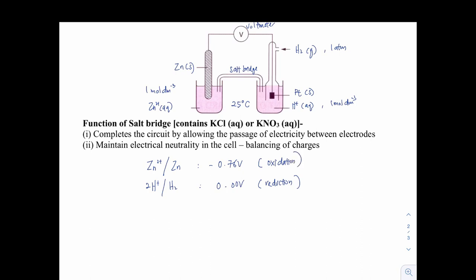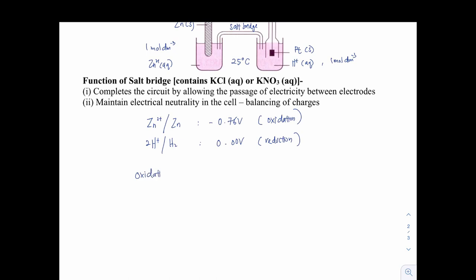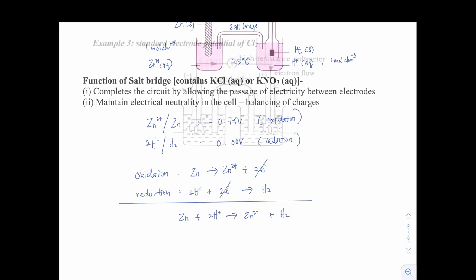From here, we can determine that oxidation happens at the zinc electrode. So therefore, we are going to flip the equation from the data booklet. So it becomes zinc forming zinc 2+ plus 2e⁻. Whereas the reduction will be 2H⁺ plus 2e⁻ forming H₂ gas. And the overall equation is going to be like this. First of all, we cancel the electrons. And the overall equation becomes zinc plus 2H⁺ forming zinc 2+ and H₂ gas.